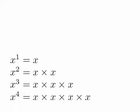This is probably familiar to you. This is the basic rules of exponents. And so if you have x to the first, you just have a single x that's equal to itself.